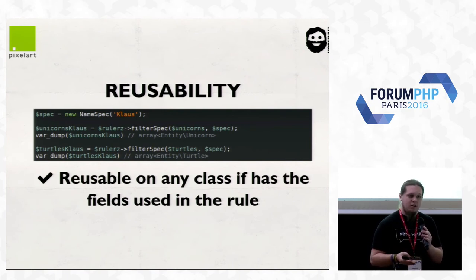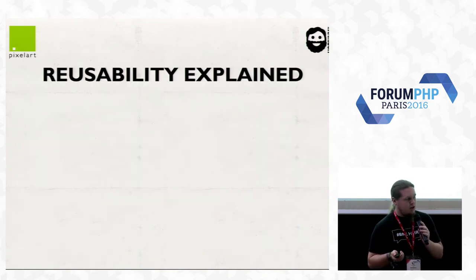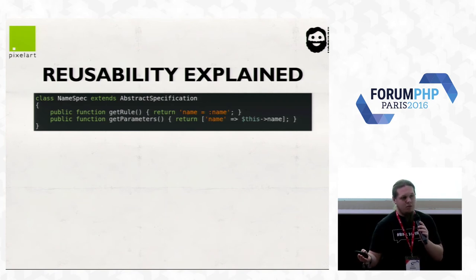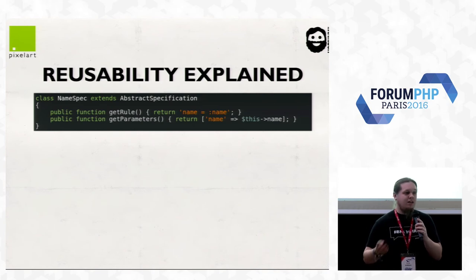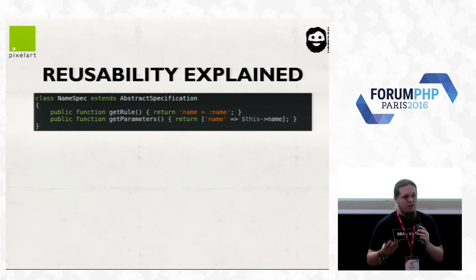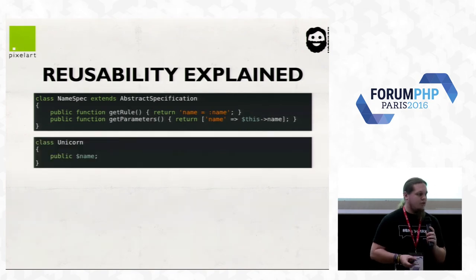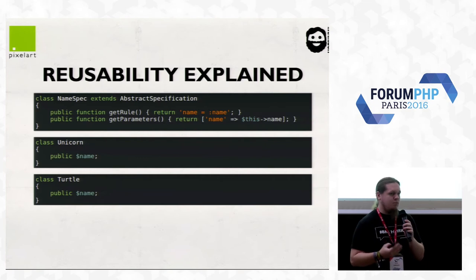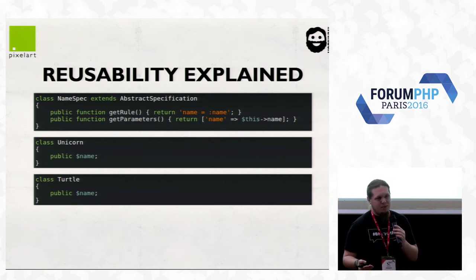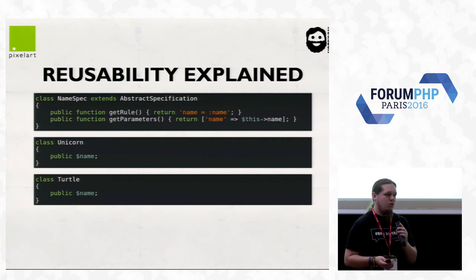Of course, it needs a clear database design for reusability. Our name spec filters against the name attribute, so all models you want to filter should have the name attribute — the turtle should not be called name2 or title. You need a clear database or model architecture. If you want to introduce specifications in a legacy app, it may not work best. For a new app, design it clearly and you're blazing fast with filtering and querying.